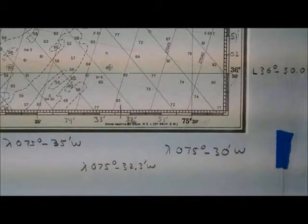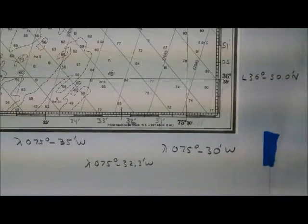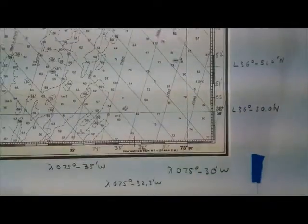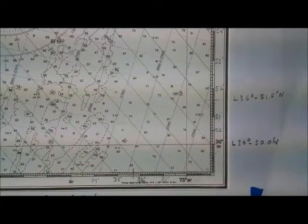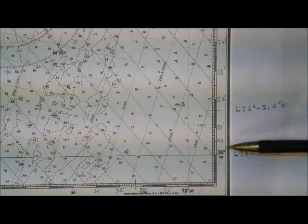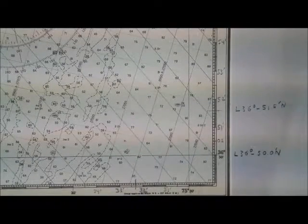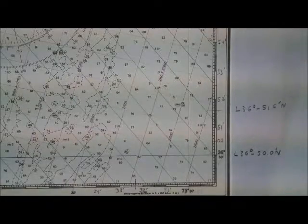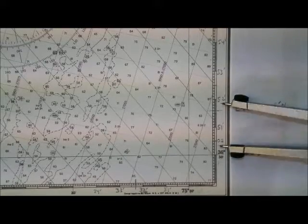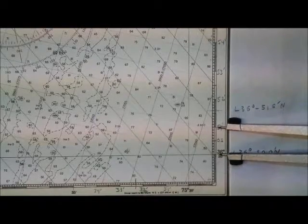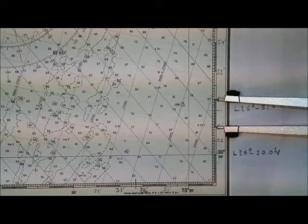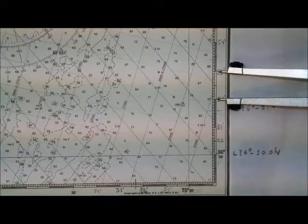Now the other interesting thing that we have to do on our Mercator chart is when it comes to measuring distances. And distances we can measure using the latitude scale. Because one minute of latitude equals one nautical mile. So this minute right here between the 50 and the 51, right here, represents one nautical mile. This represents one nautical mile. This represents one nautical mile. This does.